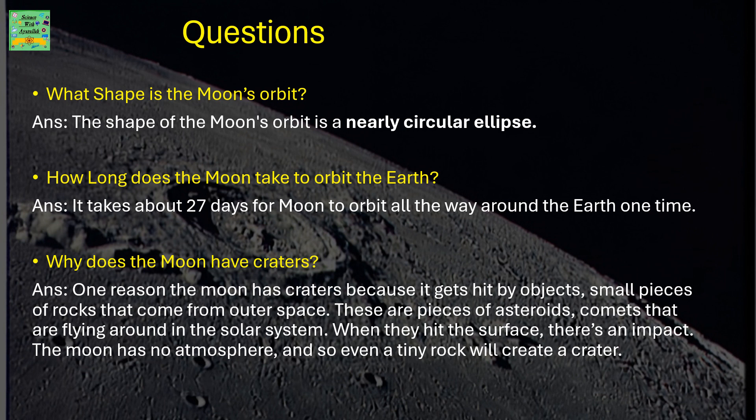Why does the moon have craters? One reason the moon has craters is because it gets hit by objects - small pieces of rocks that come from outer space. These are pieces of asteroids and comets that are flying around in the solar system. When they hit the surface, there's an impact. The moon has no atmosphere, and so even a tiny rock will create a crater.